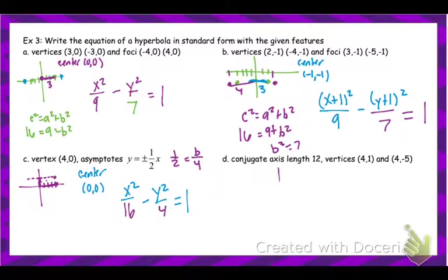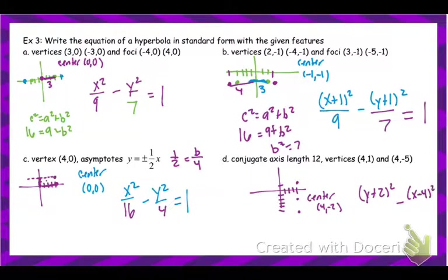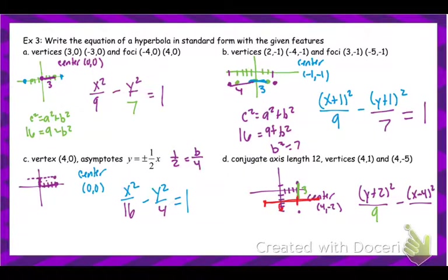On the last writing equation example: plot the vertices. The conjugate axis has a length of 12 — the conjugate axis is the one that does not touch the graph. The midpoint between those vertices gives center (4, −2). Since this graph opens up and down, y comes first. The vertical distance to the vertex is 3, so 3² = 9. The entire conjugate axis is 12, so the half-distance is 6, and 6² = 36.